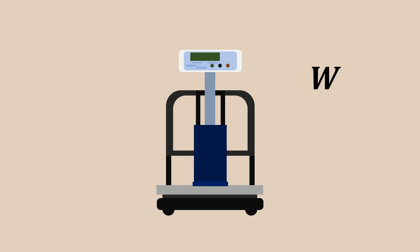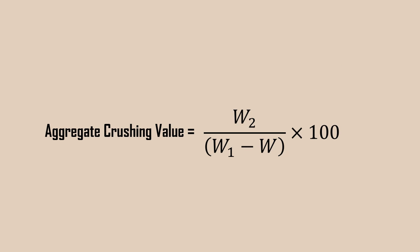Now, finally, weigh the empty cylindrical measure, considered as W. The aggregate crushing value is obtained by the equation W2 divided by W1 minus W into 100.